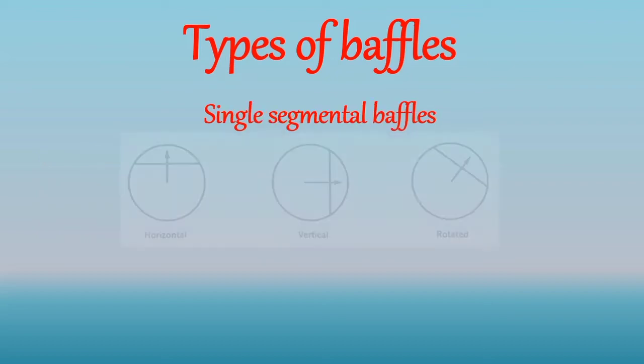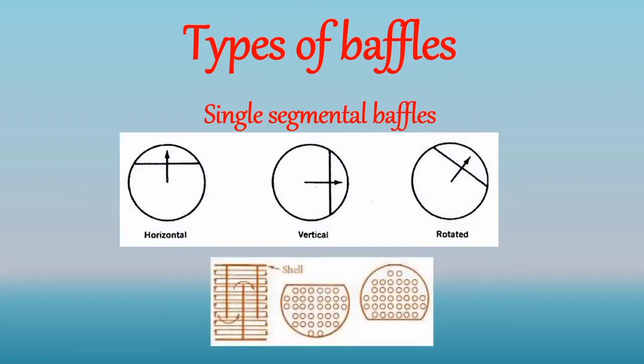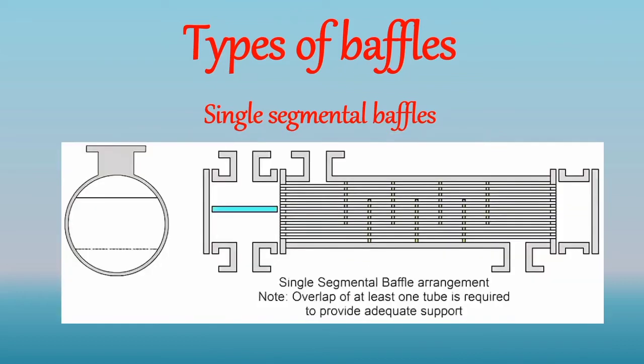The single segmental baffle is mostly used in shell and tube heat exchangers, and it is mostly used in oil refining and chemical engineering devices. The single segmental baffle can be classified into horizontal cut, vertical cut, and rotated cut baffles. When the height of the baffle is 75% of the inside diameter of the shell, it is called a 25% cut segmental baffle. And the 25% cut segmental baffle is the optimum, giving good heat transfer rates without an excessive pressure drop.